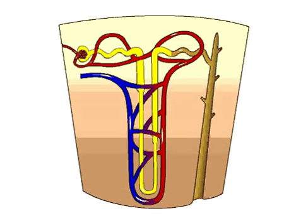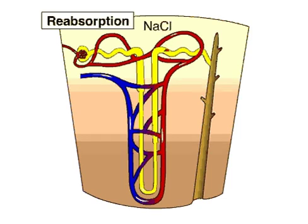More substances are reabsorbed from the distal tubule. Sodium chloride is actively transported out of the filtrate. Bicarbonate ions may be reabsorbed too, helping to regulate body pH.